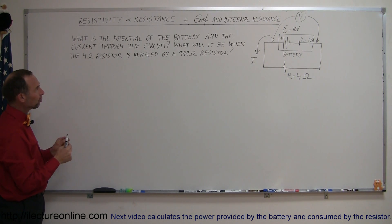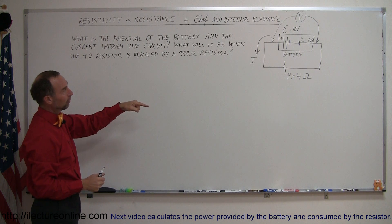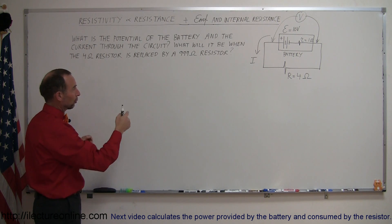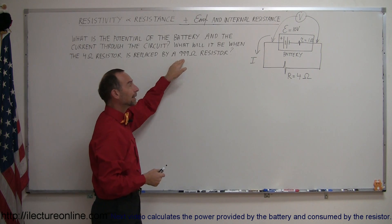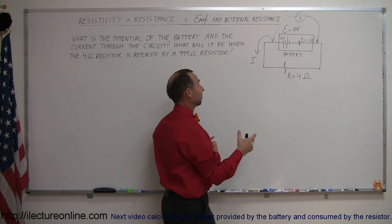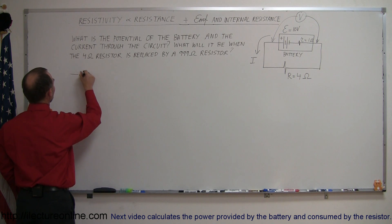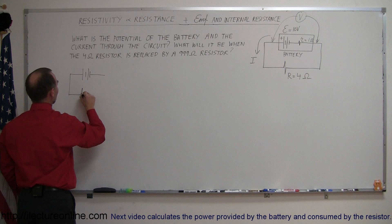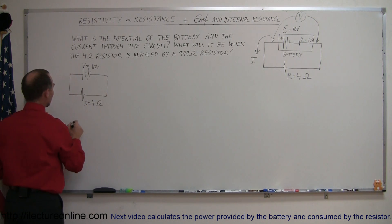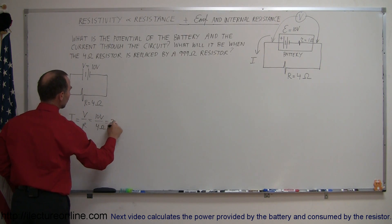The question is: what is the potential — the voltage across the two terminals of the battery — and the current through the circuit when connected like this? And what will the new values be when we replace the 4 ohm resistor with a 999 ohm resistor? Normally, you'd go to the store, buy a 10 volt battery, hook it up to your 4 ohm resistor, and say the voltage is 10 volts, resistance is 4 ohms, so current I = V/R = 10/4 = 2.5 amps.